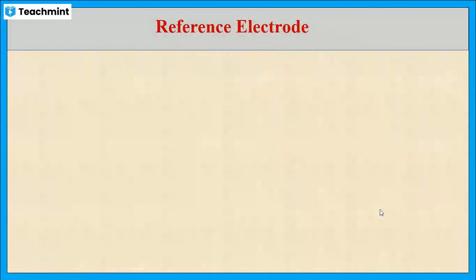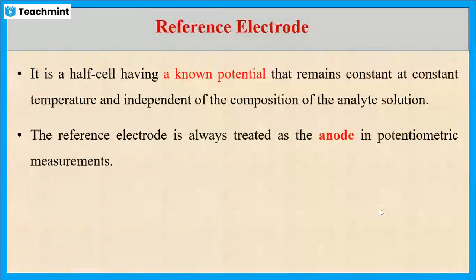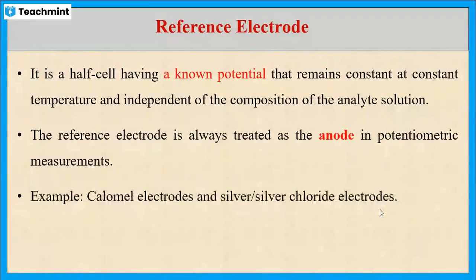Now, let us see what is a reference electrode. It is an electrode having a known potential that remains constant at constant temperature and is independent of the composition of the analyte solution. It is always treated as anode in potentiometric measurements. Most common examples are calomel electrodes and silver-silver chloride electrodes.